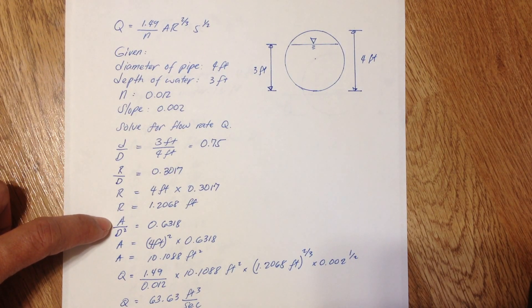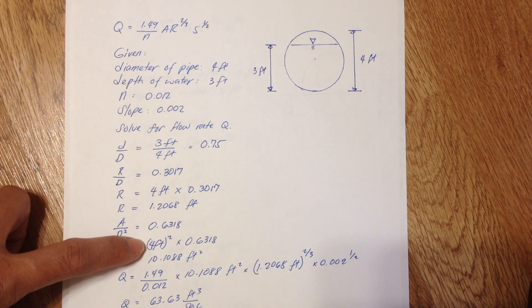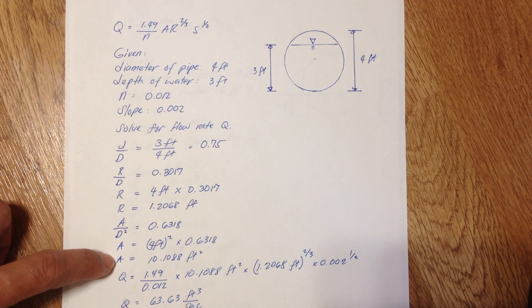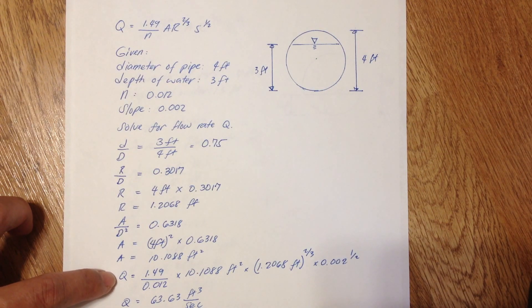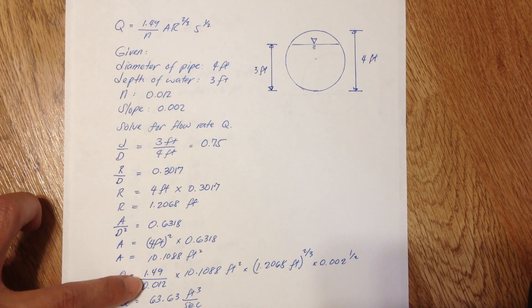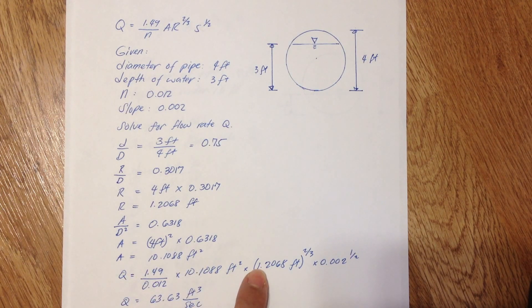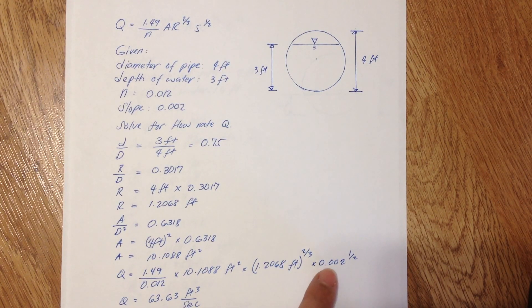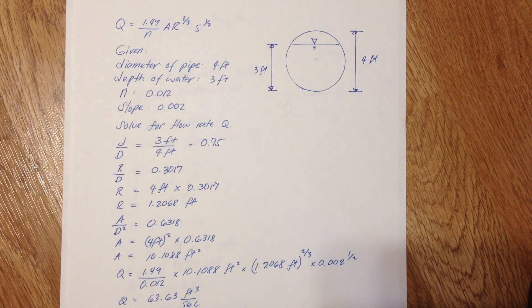Same thing for the area. D is also the diameter of the pipe. To get the area, multiply 4 feet squared times 0.6317 and you'll get the area of water which is 10.1088 square feet. Now we can calculate the flow rate by substituting those values: 1.49 divided by 0.012 times 10.1088 square feet (the area) times 1.2068 feet (the hydraulic radius) to the two-thirds power times 0.002 (the slope) to the one-half. And now we get the flow rate of 63.63 cubic feet per second.